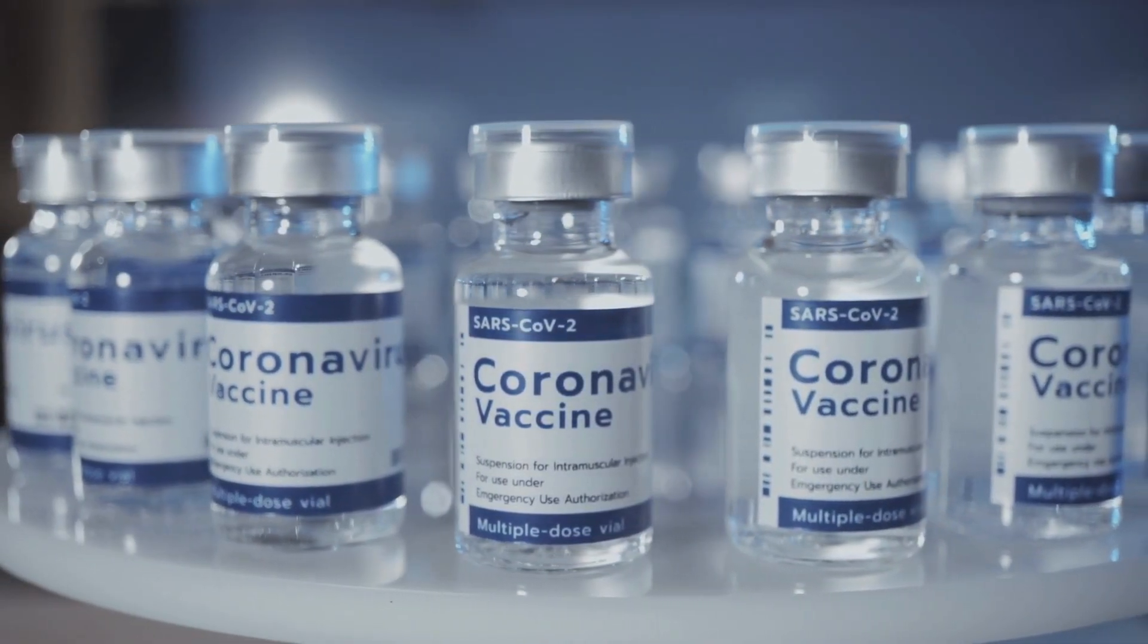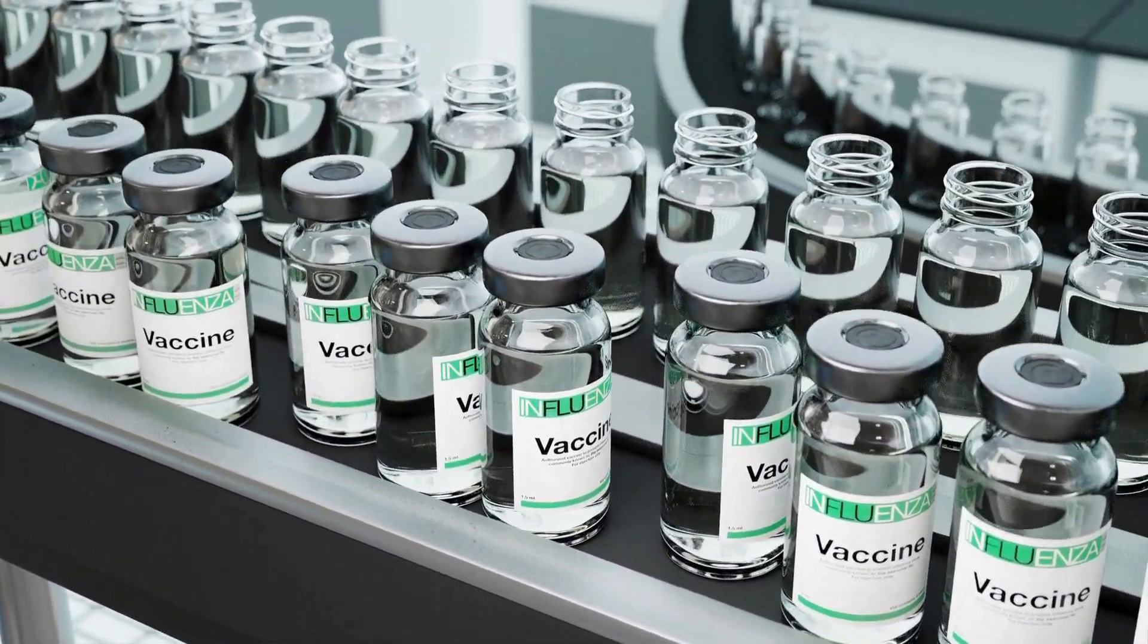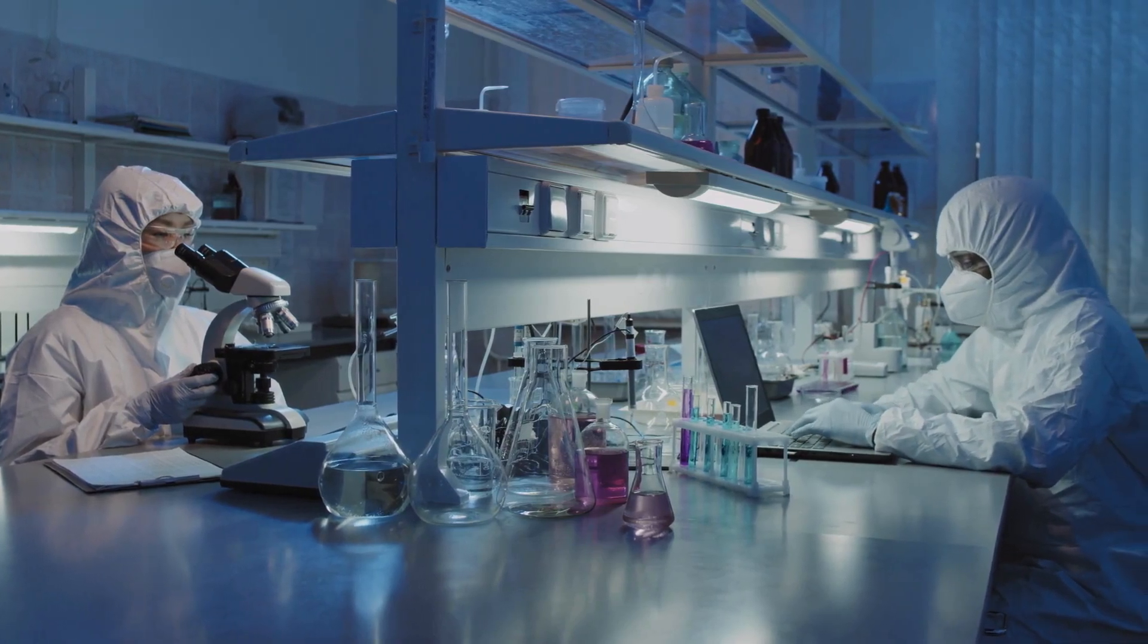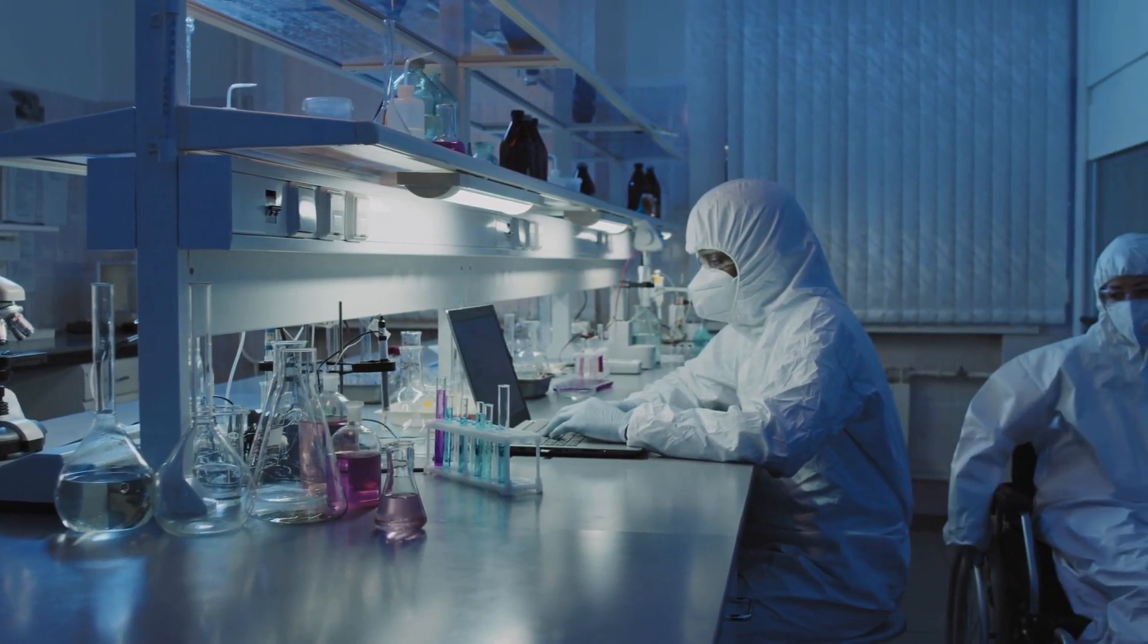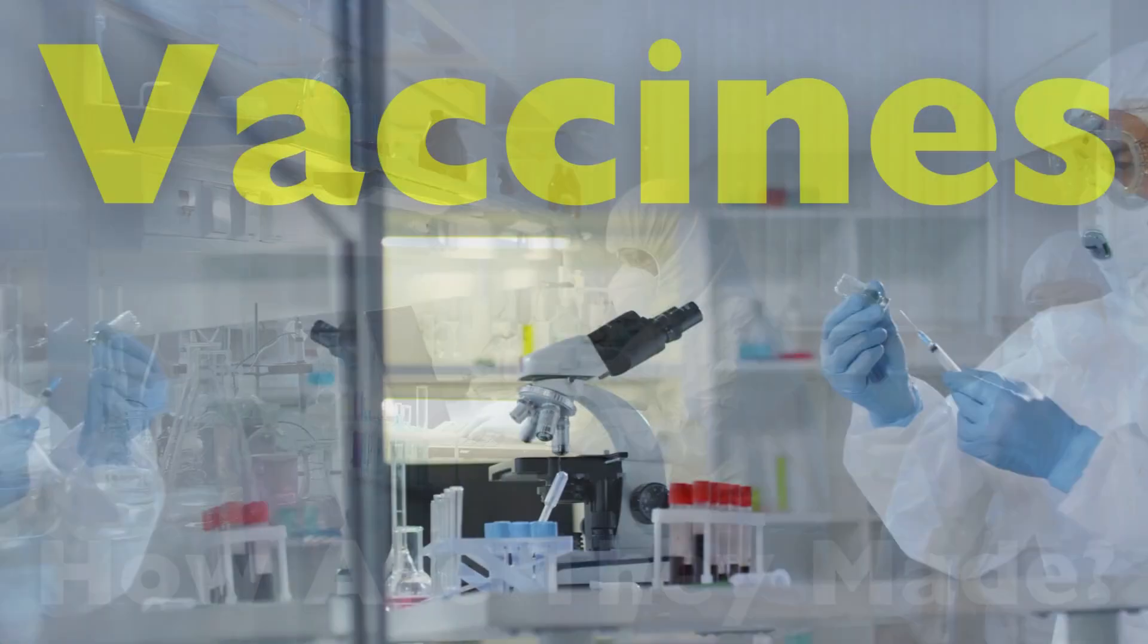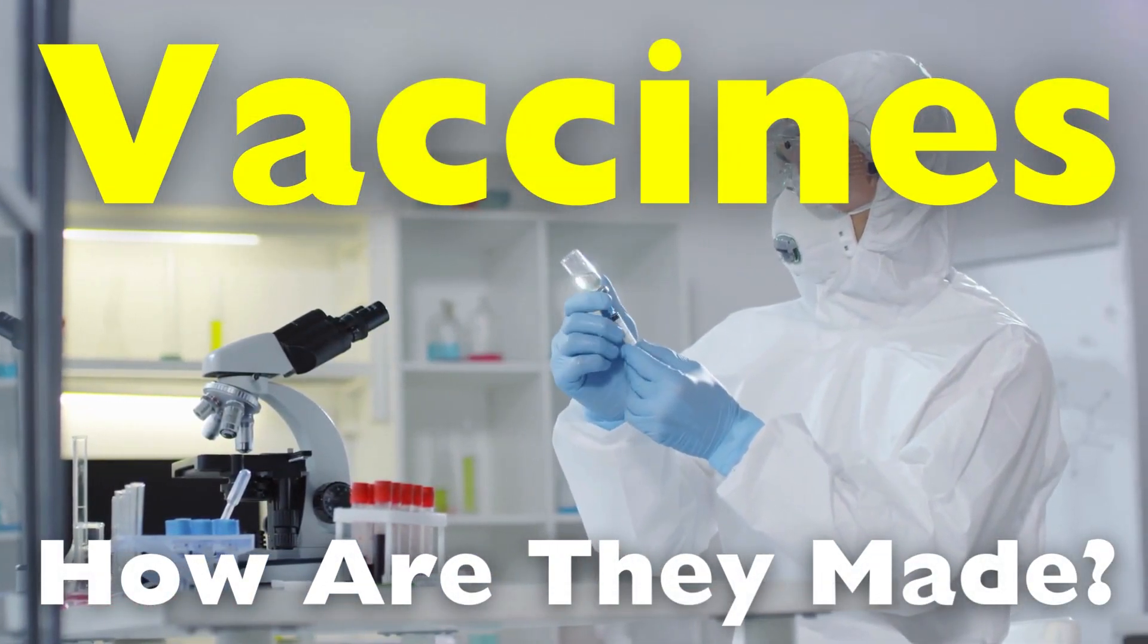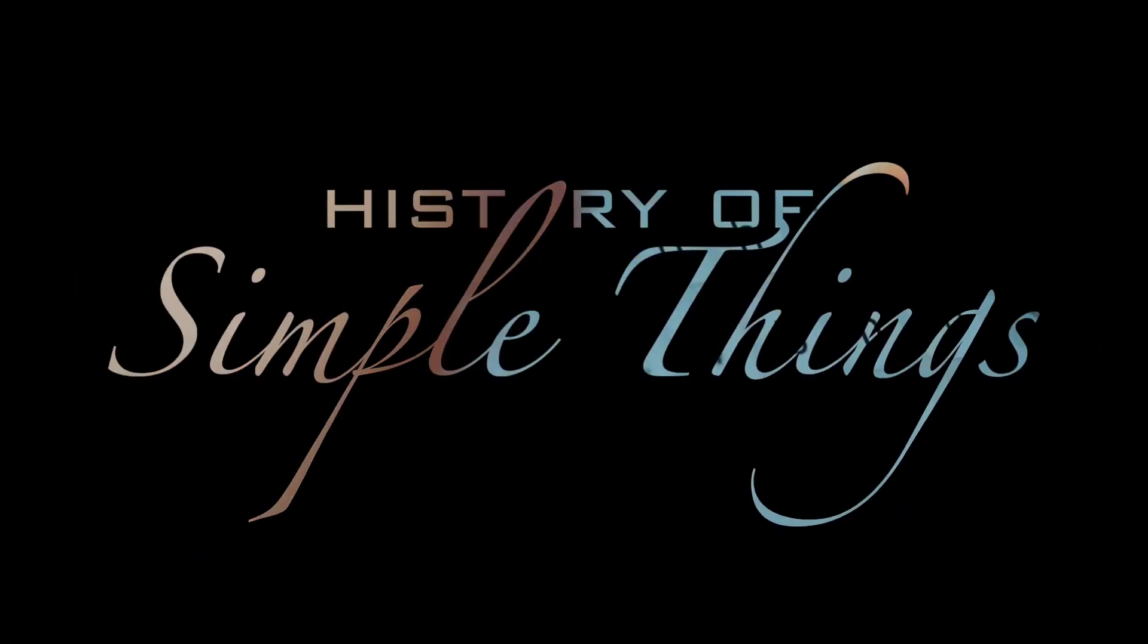Especially on a massive scale. Mass-producing vaccines is a long, careful process. It takes months of work, strict safety checks, and specialized equipment to make sure every single dose is safe, clean, and effective. Today, we'll walk through the full process of how vaccines are made from start to finish, right here on History of Simple Things.